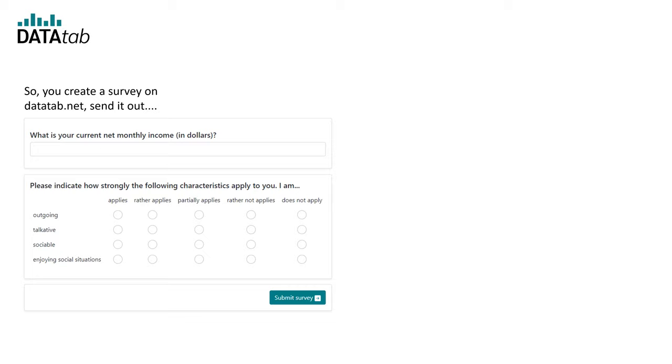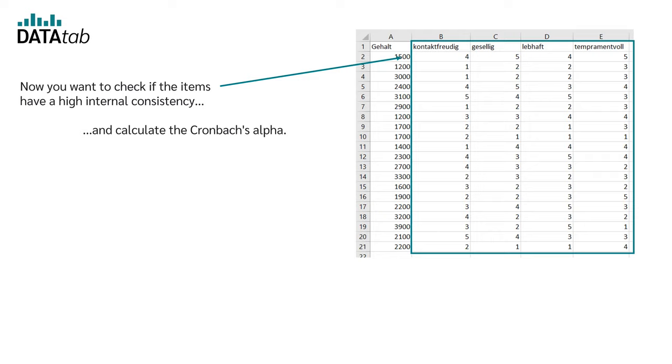So what you do now is you create a survey on datatab.net and send it out, and you have the answers displayed in an Excel table. Now you want to check if the items have a high internal consistency and calculate the Cronbach's alpha.